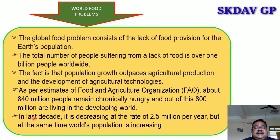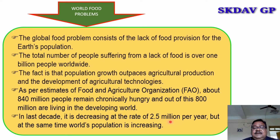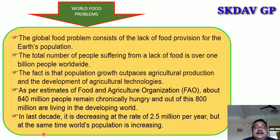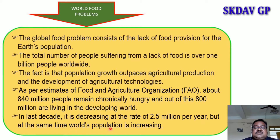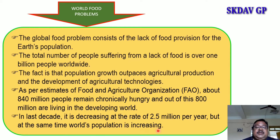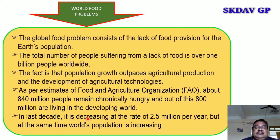In the last decade, the number of hungry people is decreasing at the rate of 2.5 million per year, but at the same time the world's population is increasing. So the population is still increasing.